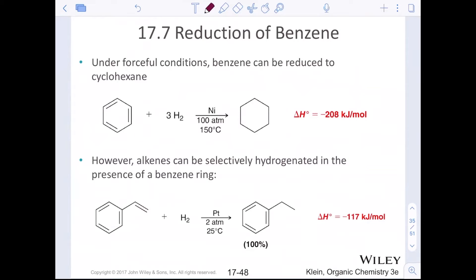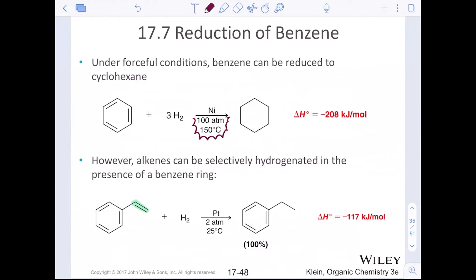However, alkenes can be selectively hydrogenated using our reactions from last semester. Hydrogen with platinum, palladium on carbon, any of those, we can selectively reduce still our alkenes or our non-aromatic pi bonds. So you still can use H2, palladium on carbon or platinum or nickel as long as you don't use your pipe bomb. Don't use your bomb. Don't do 100 atm at 150 degrees Celsius. Just write the actual catalyst on there. Platinum, nickel, palladium on carbon at room temperature and normal atmospheric conditions will selectively reduce alkenes and not the benzene. You want to reduce benzene? Sure, pump up the pressure and pump up the temperature.